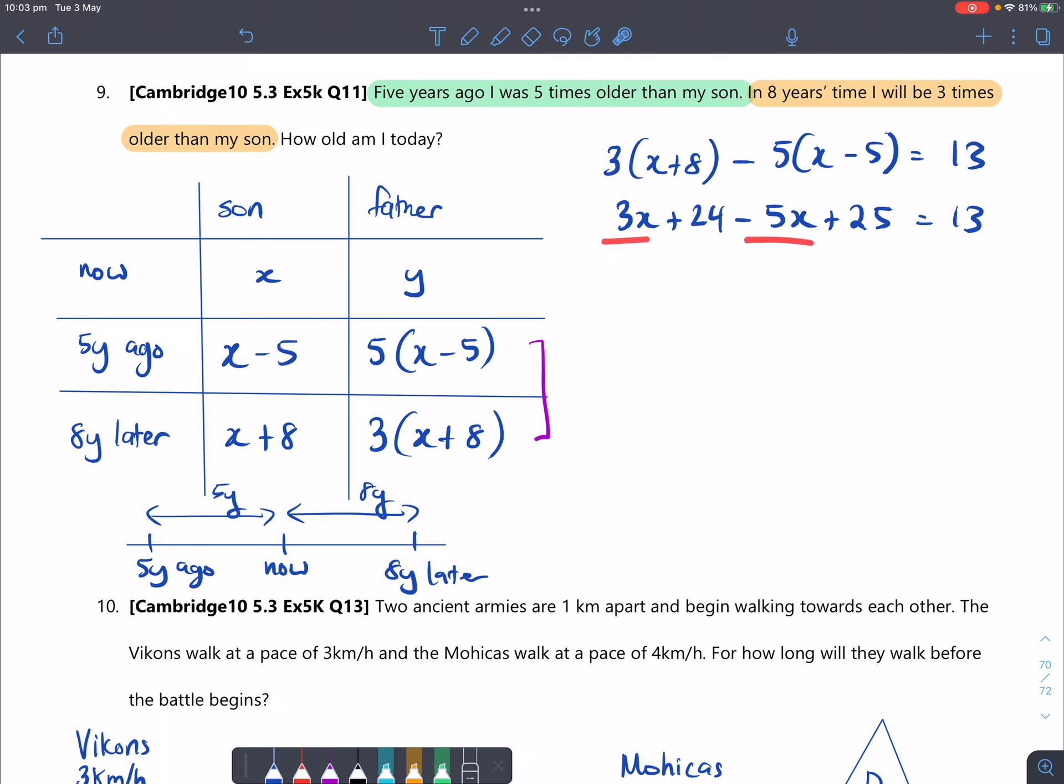Subtracting 3x by 5x gives you negative 2x. 24 plus 25 is 49. And then if I move this over, 13 minus 49 that would become negative 36.